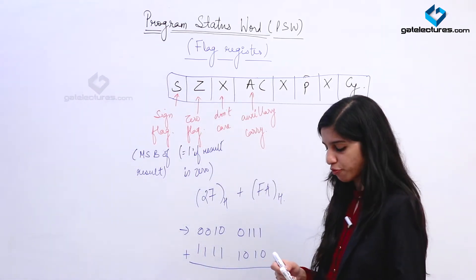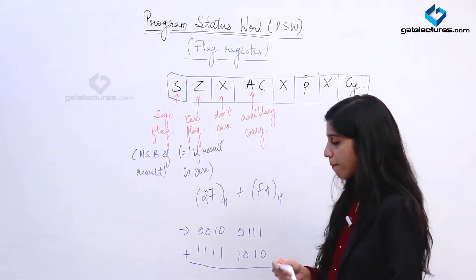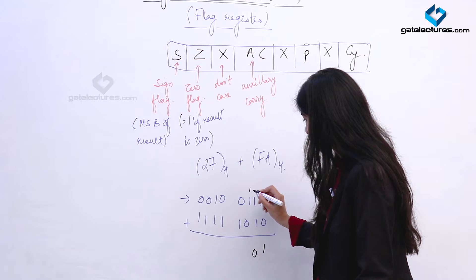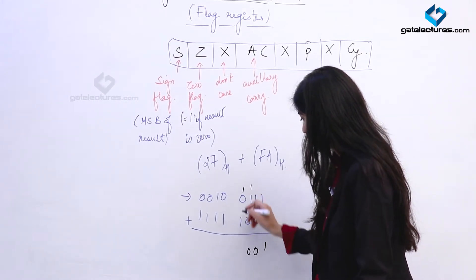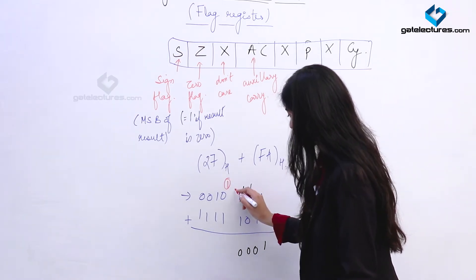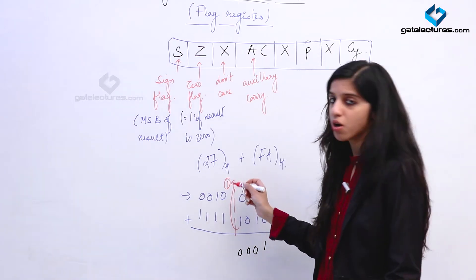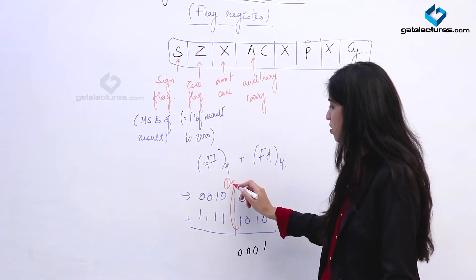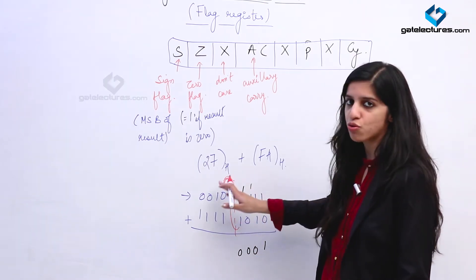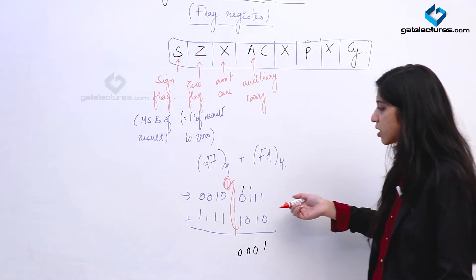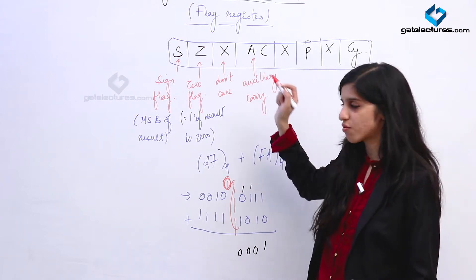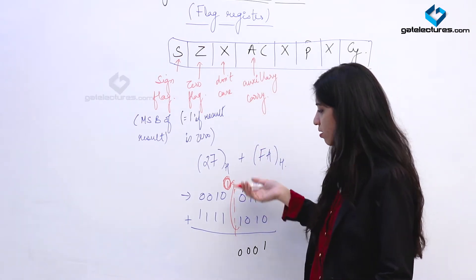Performing the addition: 1 and 0 is 1, 1+1 is 0 with carry of 1, 1+1 is again 0 with carry of 1, again 0. Now see this carry that occurred from the lower 4 bits to the upper 4 bits — this is known as Auxiliary Carry. If in any operation this carry occurs, this flag is going to be set to 1.